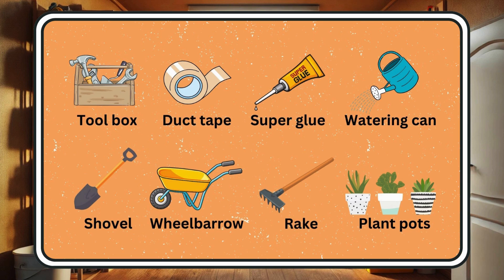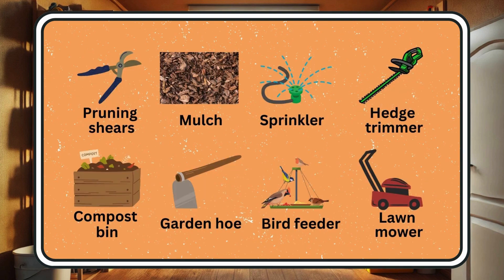Watering can. Shovel. Wheelbarrow. Rake. Plant pots. Pruning shears. Mulch. Sprinkler. Hedge trimmer. Compost bin. Garden hoe. Bird feeder. Lawn mower.